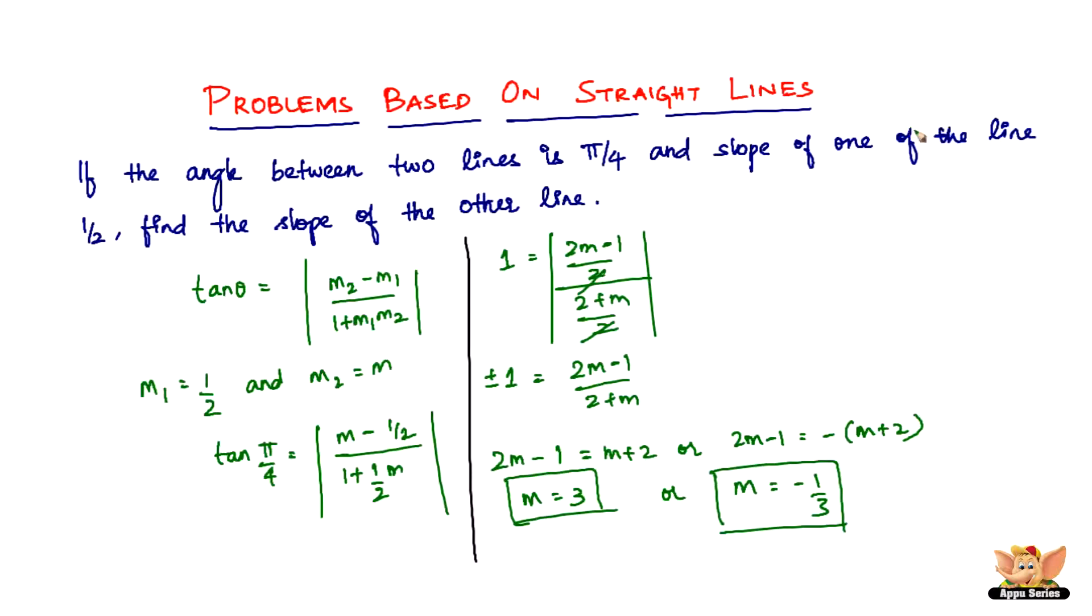So hence the slope of the other line that they've asked us to find is either 3 or minus 1 by 3. There are two answers, of course, because it is plus or minus. Therefore m equals 3 or minus 1 by 3. So that is how you solve this problem.